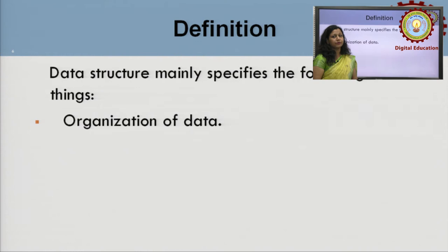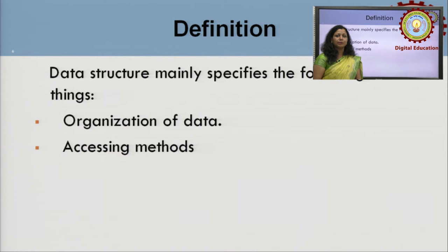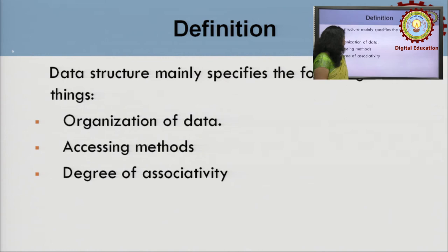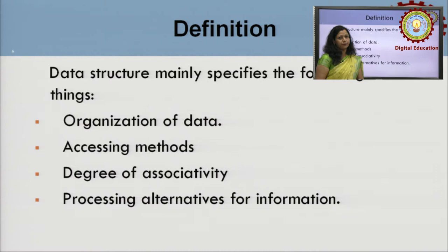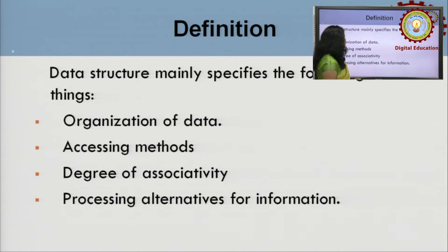Second, once data is stored, we need to access it — what operations can be performed and what are the accessing methods. Third, degree of associativity — how the data items are interlinked and connected to each other. Fourth, processing alternatives for information — when we need to retrieve information, what processing alternatives are available. Data structure focuses on all four: organization of data, accessing methods, degree of associativity, and processing alternatives for information.